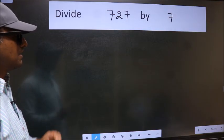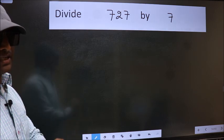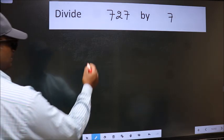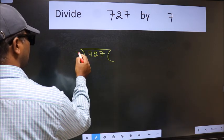Divide 727 by 7. To do this division, we should frame it in this way. 727 here and 7 here.